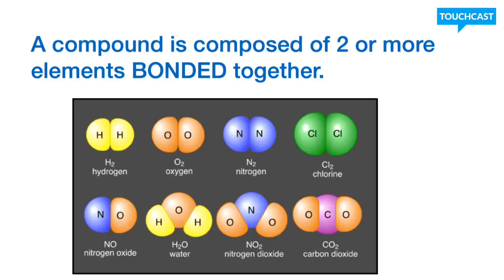All right, if you look at the bottom row, you can see that there's two different or sometimes three different types of atoms linked together. Those are all going to be compounds. So, once again, you can see the bond connecting the different types of atoms, making them compounds.